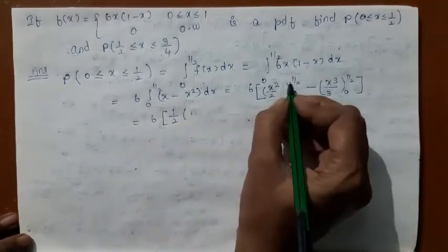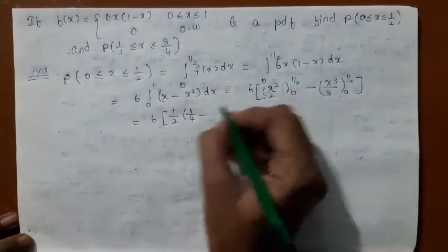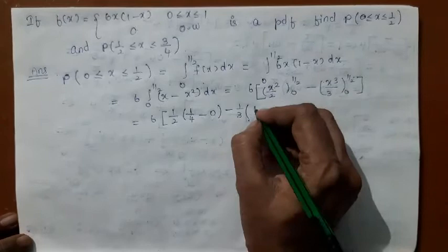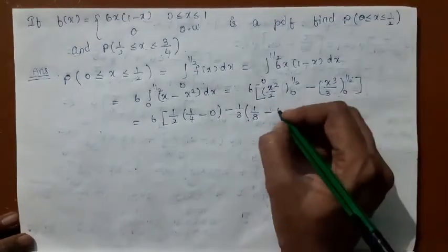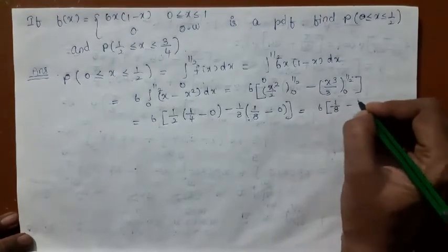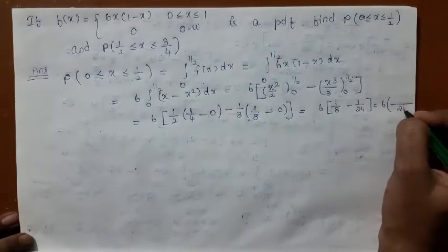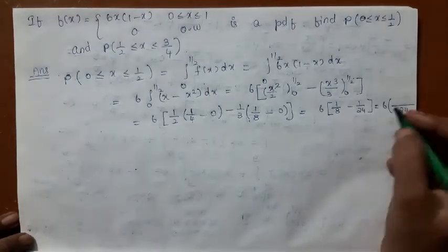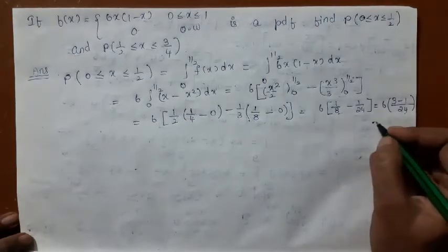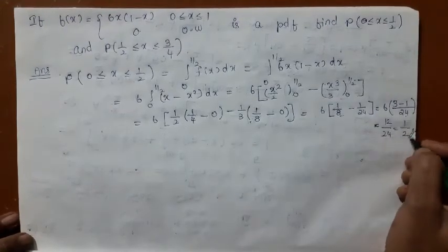1/2 is taken out. Putting the upper limit, x² becomes 1/4; putting the lower limit, x² becomes 0. For the cubic term, (1/2)³ = 1/8 for the upper limit, and the lower limit gives 0. So you have 6 × (1/8 − 1/24). Taking 24 as the LCM: 3 × 8 = 24, giving 12/24 = 1/2. The first problem is over.